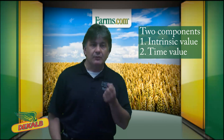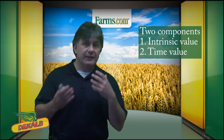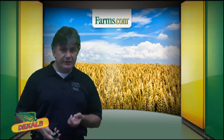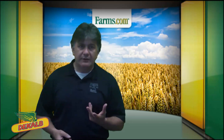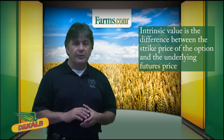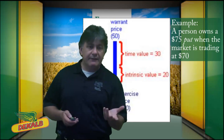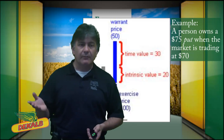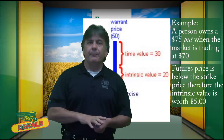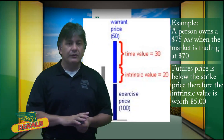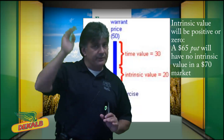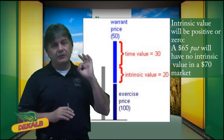There are two components to an option premium. Premiums are decided between buyers and sellers, but they have two components: intrinsic value and time value. Intrinsic value is the difference between the strike price of the option and the underlying futures price. For example, a person who owns a $75 put in a $70 market — because the futures price is lower than the strike price — the intrinsic value is worth $5. Vice versa, a $65 put in a $70 market, because the futures price is above the $65 strike, that option is worth $0.